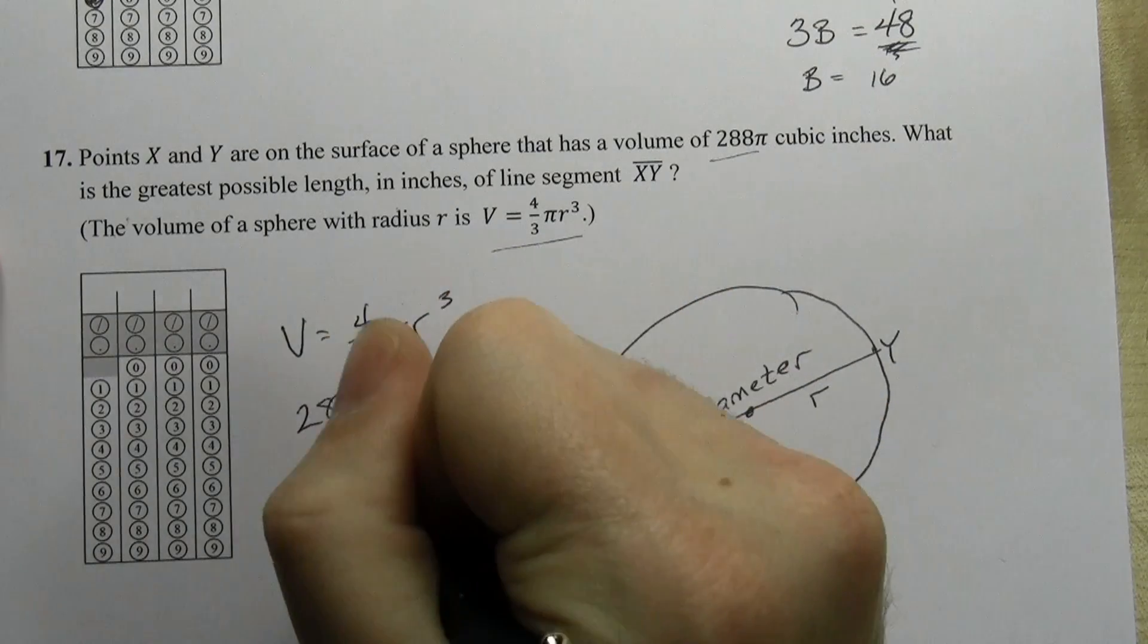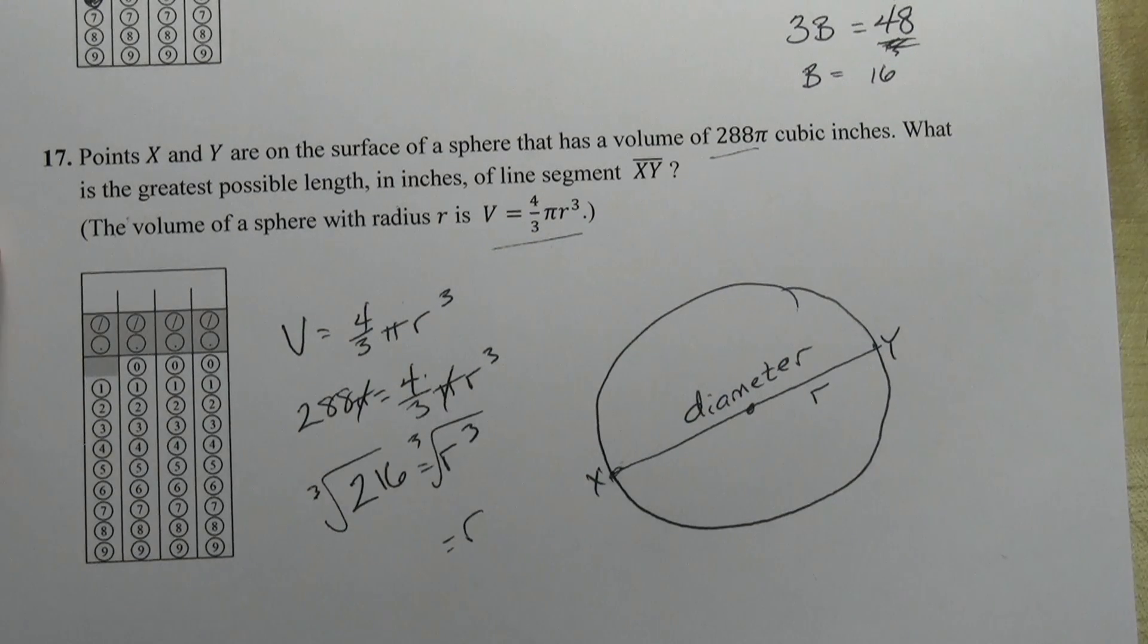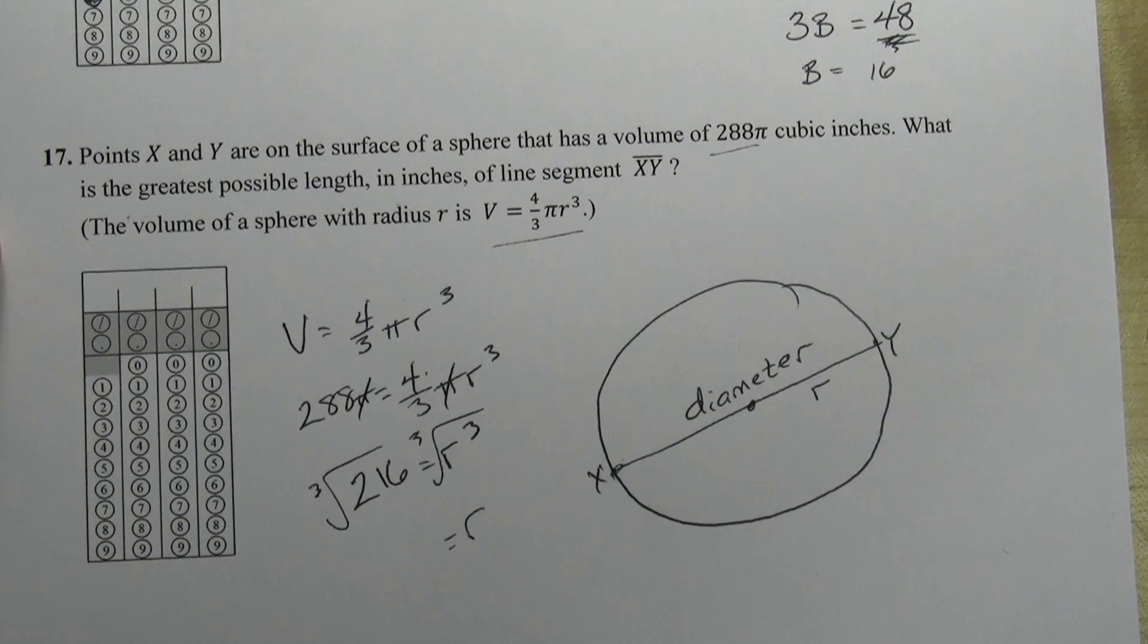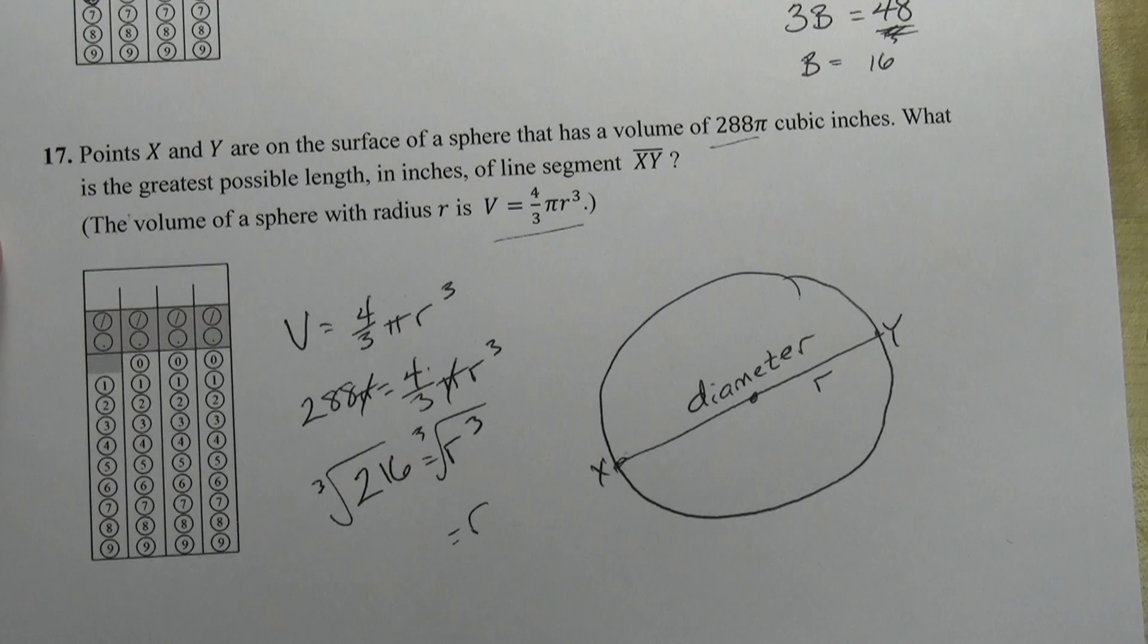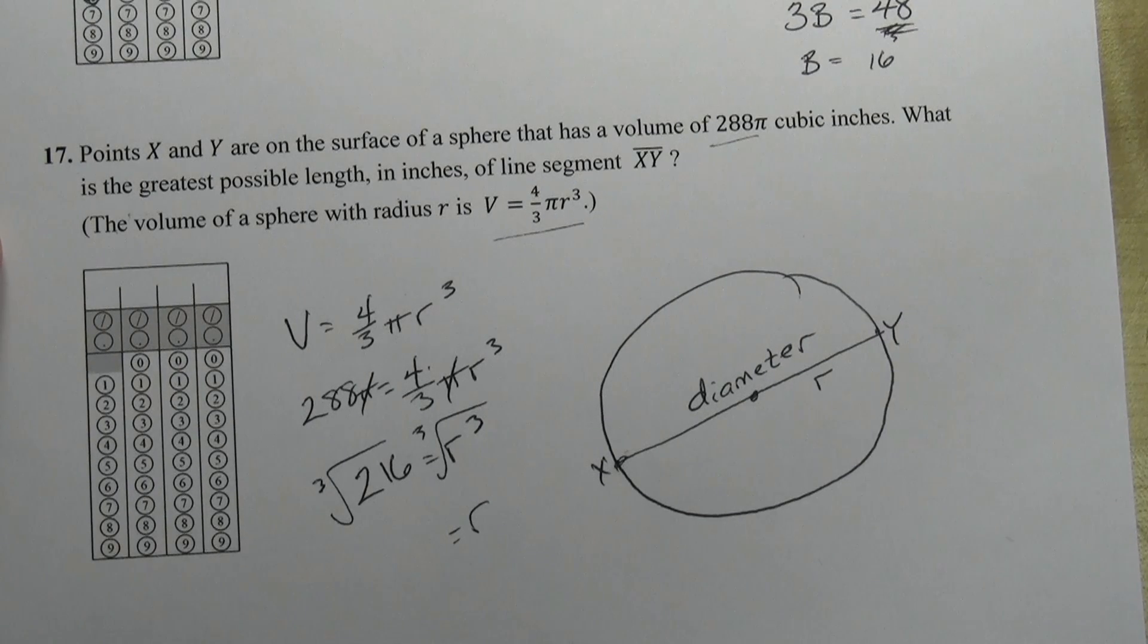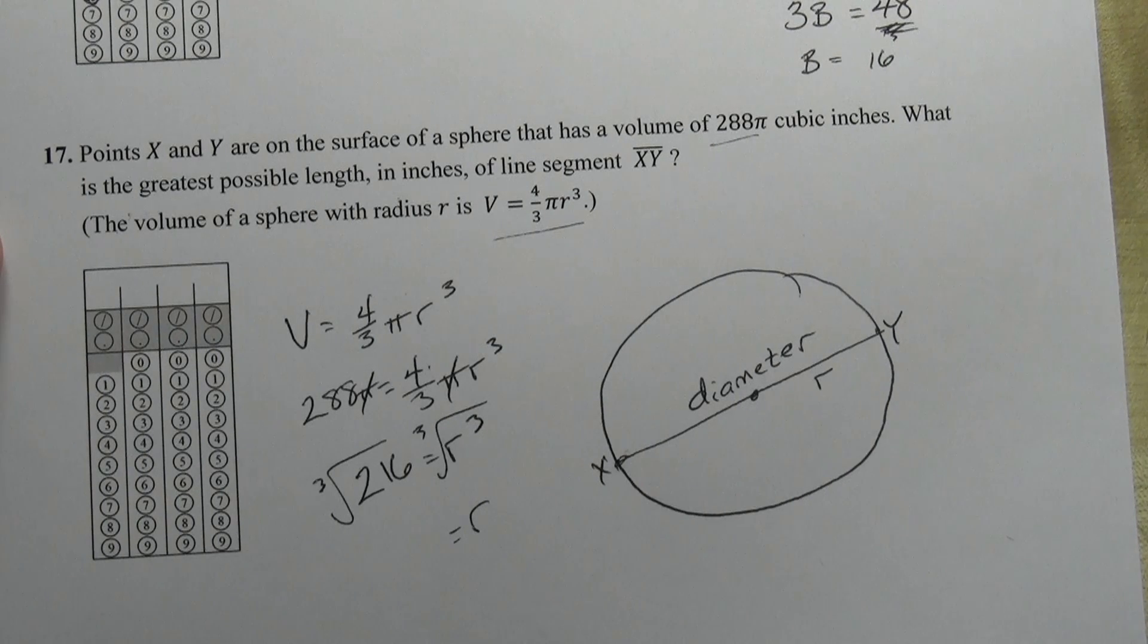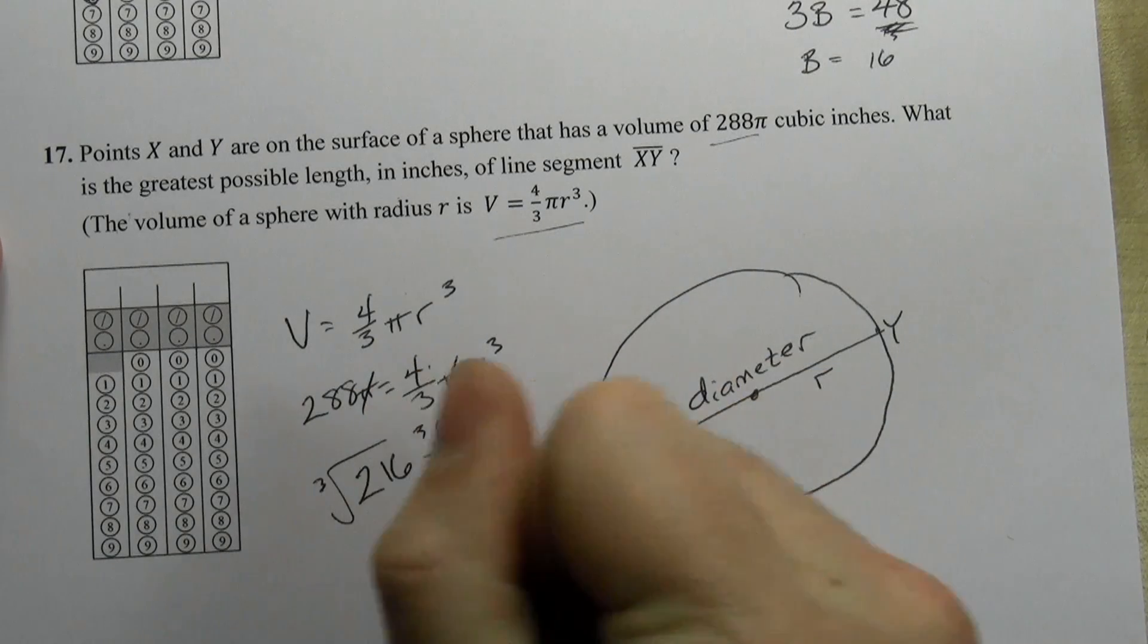And we can find the value of r by taking the cube root of both sides. And everyone knows that the cube root of 216 is... one second, I'm sorry, I should know this. I think it's 6, but I just want to double check. 216, yeah, 6. So I know that the radius is 6.